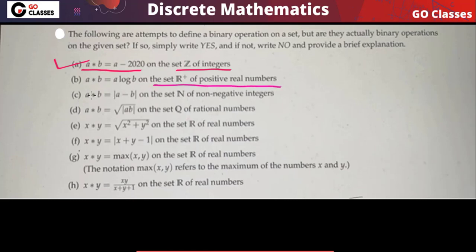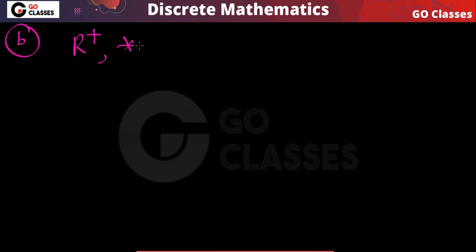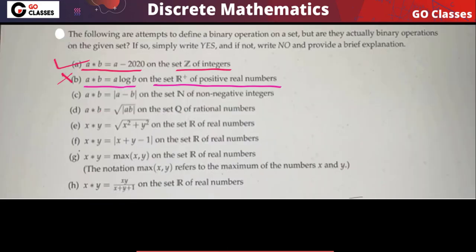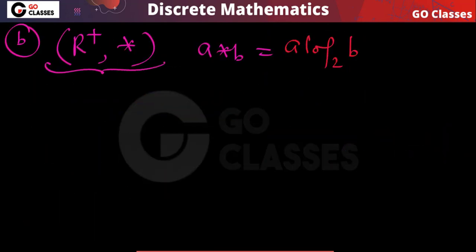On the set of positive real numbers, can I say a star b equals a log b is a binary operation? This is not a binary operation on the set of positive real numbers. Let's assume the log base is 2 — even then, this is not a binary operation.